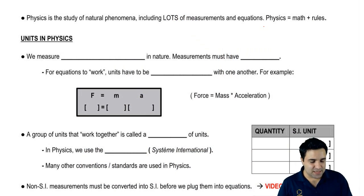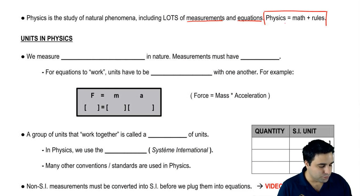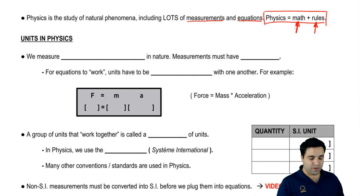Physics is the study of natural phenomena. I'm not going to bore you with a long definition. It's basically lots of measurements and lots of equations. I like to think of physics as math with rules. It's basically a math class with a storyline. For example, if you drop something, it falls. That's a rule, a physical rule, a physical phenomenon. And there's an equation that describes that. That's why I think of it as math with rules.